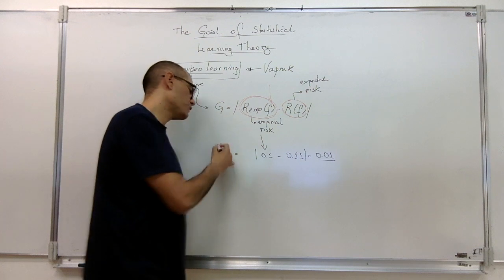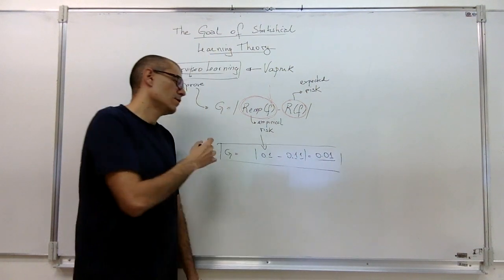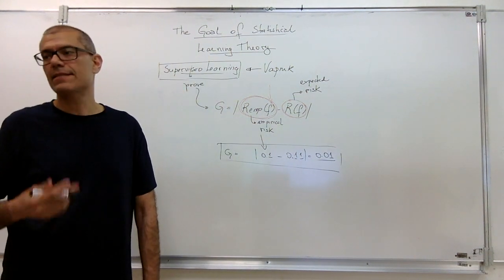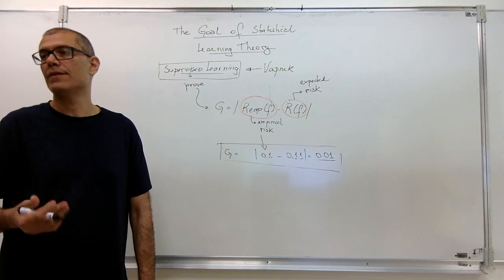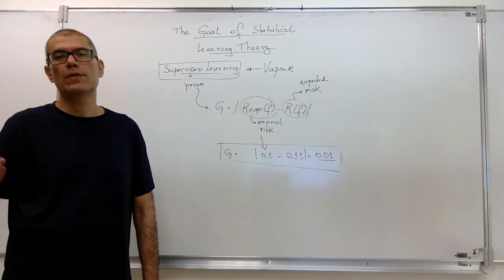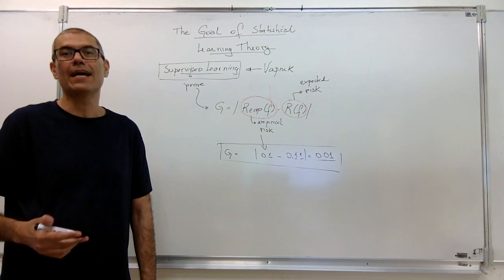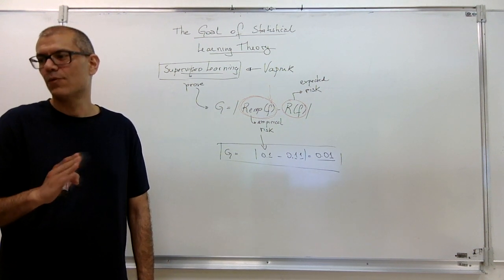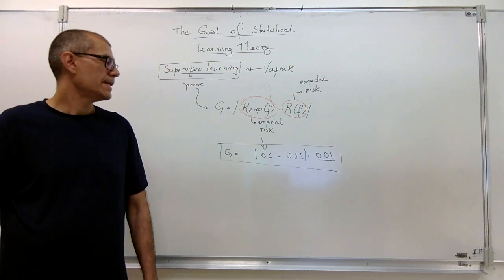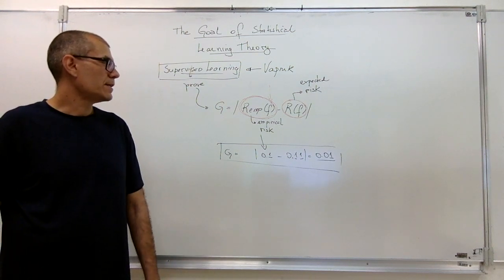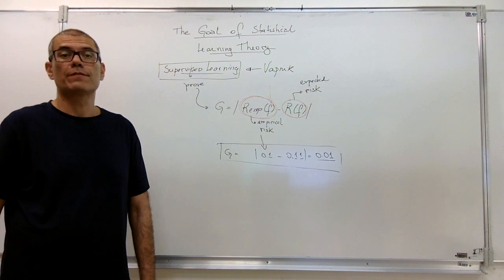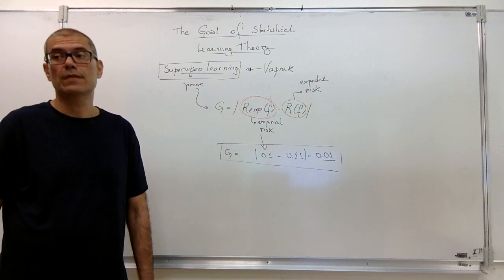So if we don't have this, we cannot ensure learning. And that's the condition that Vapnik defined, like a long time ago, 1965 to 1999. That was the period of time. And that's how we define learning, basically, in terms of supervised learning, at least.